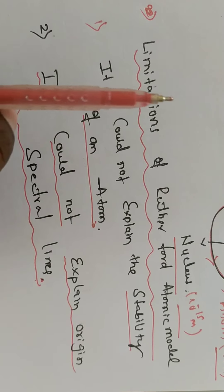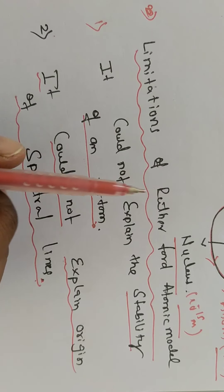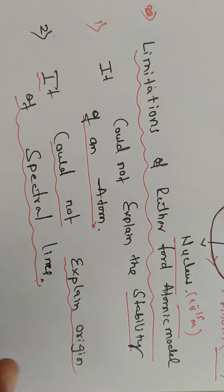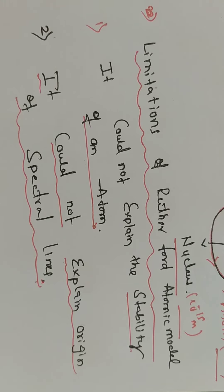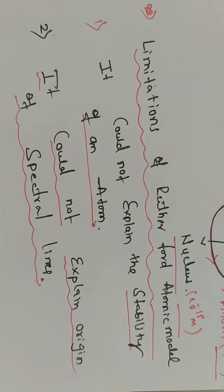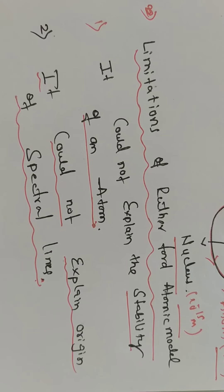Up to here, the description and limitations of the Rutherford atomic model are complete. In the next class, we will discuss the Rutherford alpha particle experiment, its graph, and the observations of the Rutherford atomic model. Thank you.